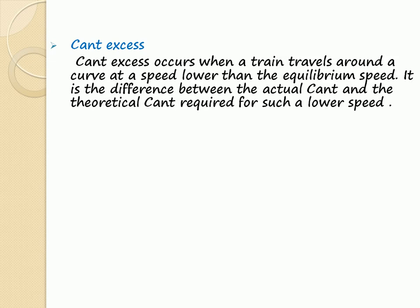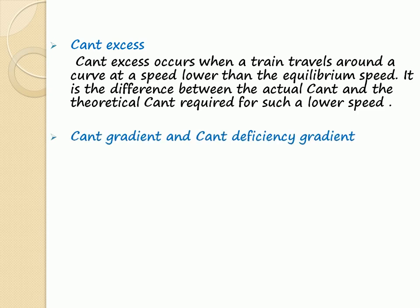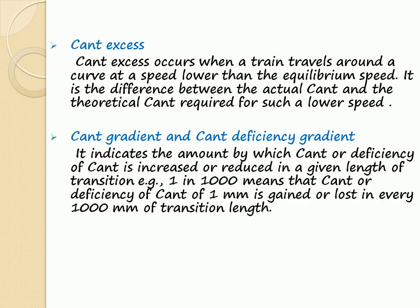Cant Excess: Cant excess occurs when a train travels around a curve at a speed lower than the equilibrium speed. It is the difference between the actual cant and the theoretical cant required for such a lower speed. Cant Gradient and Cant Deficiency Gradient: It indicates the amount by which cant or deficiency of cant is increased or reduced in a given length of transition. For example, 1 in 1000 means that cant or deficiency of cant of 1 mm is gained or lost in every 1000 mm of transition length.